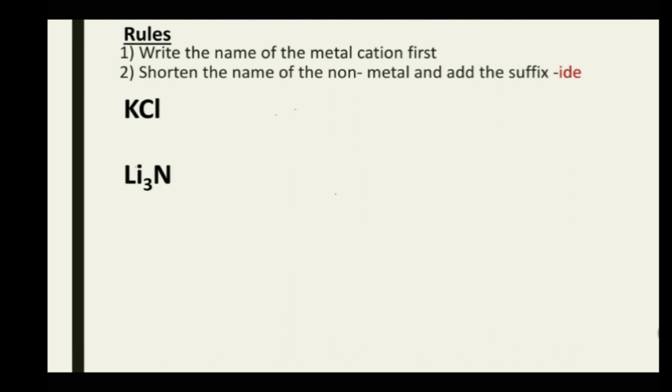Let's name KCl and Li₃N using the rules. For KCl: the metal cation is K, so potassium is named first. The non-metal is Cl — the root name of chlorine is 'chlor,' and adding the suffix '-ide' gives chloride. So KCl is potassium chloride.